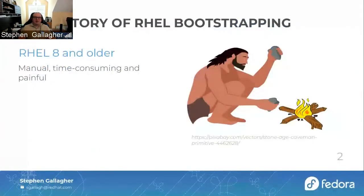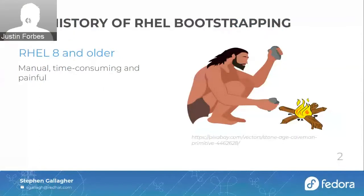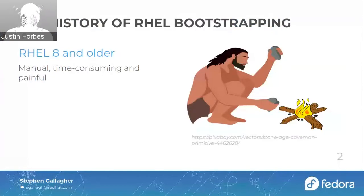Let me talk a little bit about the history of how Fedora became RHEL. With RHEL 8 as my example, and for RHELs prior to that, what we would generally do is stop after a particular Fedora release, take a snapshot of all packages intended for Red Hat Enterprise Linux, copy that internally, and then spend about the next six to nine months actively trying to bootstrap RHEL from that Fedora release — which was extremely time consuming and very painful.